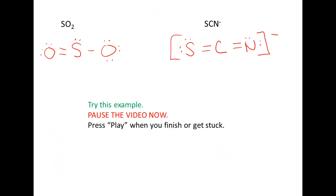Now I want you to draw the resonance structures that may exist for SO2 and SCN minus, the other two that we did in the video. I want you to decide, first, do they have resonance structures, and then I want you to draw them with the double arrows between them. So please pause the video right now and draw those structures, and when you're done, press play.